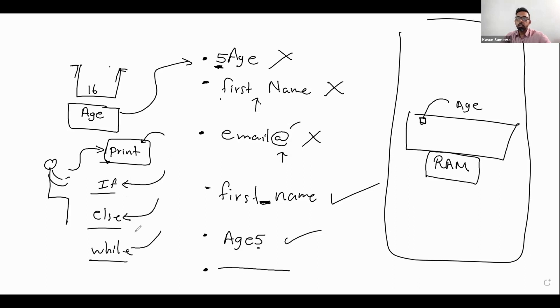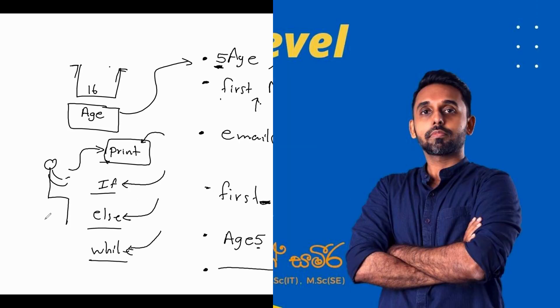We call them reserved words. We can't take those words and use them in our variables. Those are the basic rules when you're creating variables.